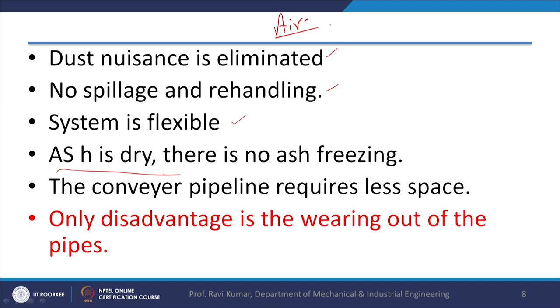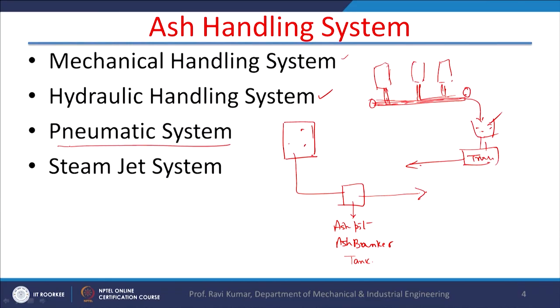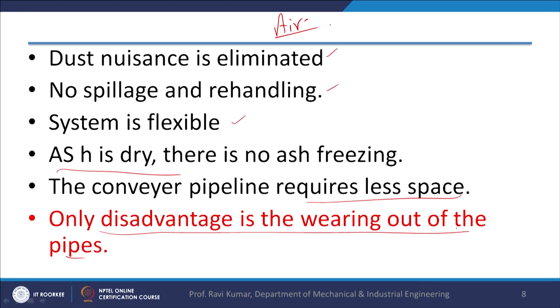In the pneumatic system, ash is dry and only piping is required; ash comes into the pipe and is removed by forced air. The main disadvantage is wearing out of the pipe, because ash particles act as abrasive material. The ash particles move at very high velocity, causing abrasive wear, and therefore frequent maintenance is required in such systems.